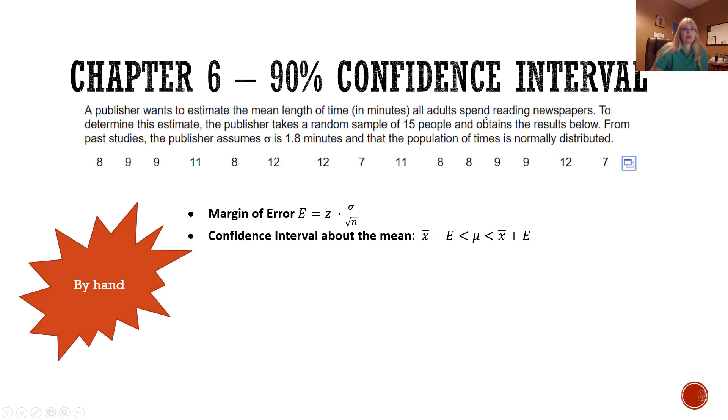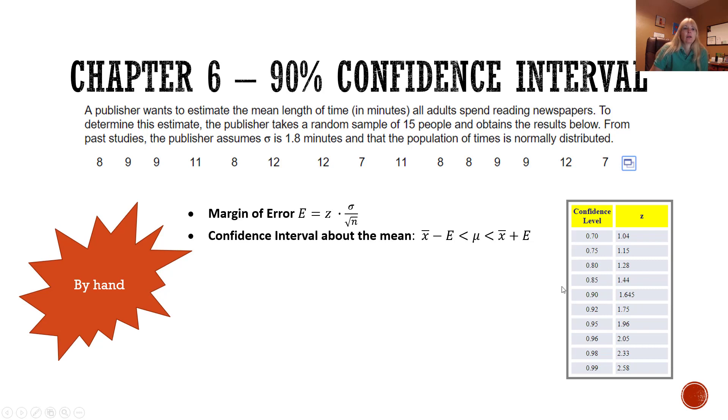This is how long it takes them to read a newspaper. Our confidence interval would be the sample mean minus this error and then plus this error. I go to my table, I want a 90% confidence interval, so I'm going to use my critical value of 1.645. There's the 1.8 square root of 15. 9.33 just magically appeared - I added up all those values and divided by 15 to find the mean, and that gives me my actual interval.